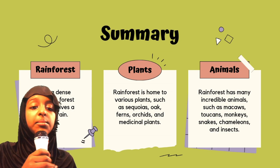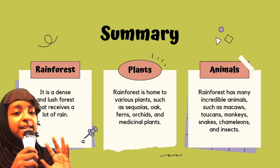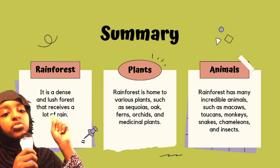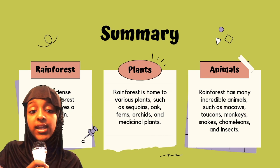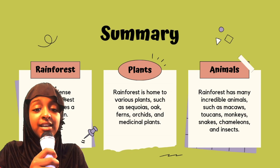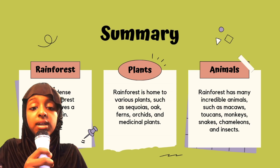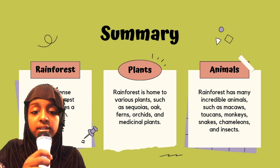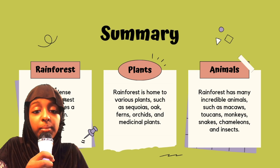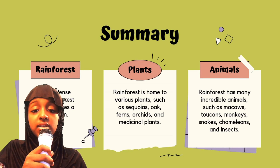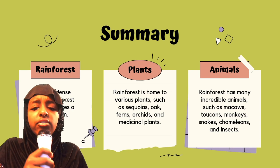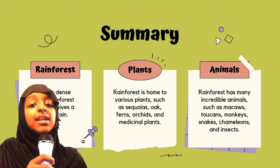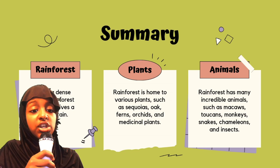Now here's the summary of what we learned in today's episode. The rainforest is a dense and lush forest that receives a lot of rain. We also learned about the plants — rainforests are home to various plants such as sequoias, oaks, ferns, orchids, and medicinal plants. We also learned about animals — rainforests have many incredible animals such as macaws, toucans, monkeys, snakes, chameleons, and insects too.